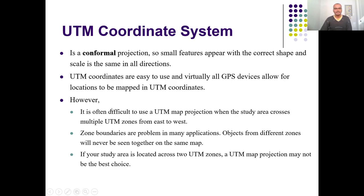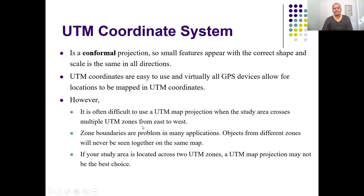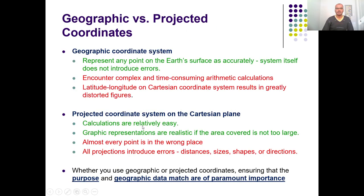The problem with UTM is that you cannot show an entire country or the entire globe in a single coordinate system because it covers only 6 degrees of longitudinal extent. If the area is less than that 6-degree extent you can show it; otherwise you cannot. You would need more than one coordinate system and it is very difficult to visualize them together. Other than that, this coordinate system is very good, especially for covering a smaller area.